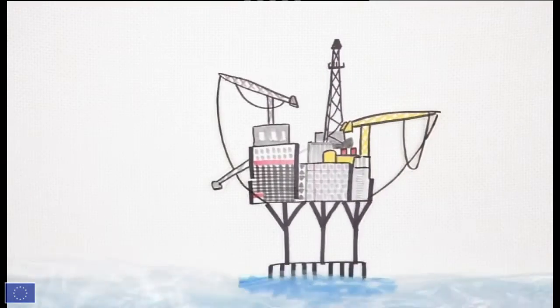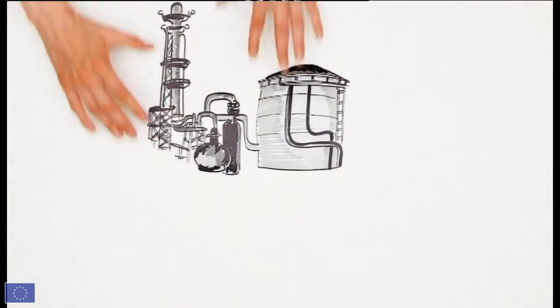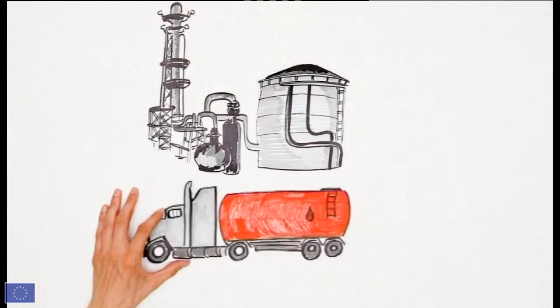Crude oil is extracted from a well, on land or at sea, and routed to a refinery where it's processed into different products. The petrol and diesel fuel then head for the pump.